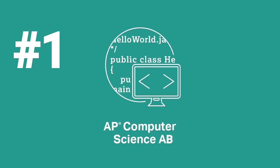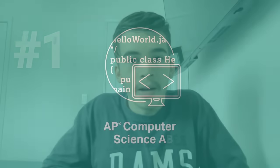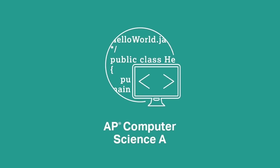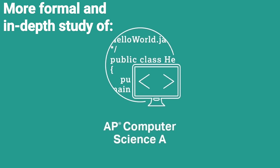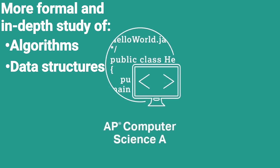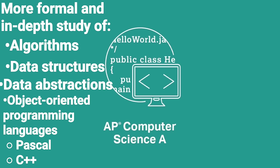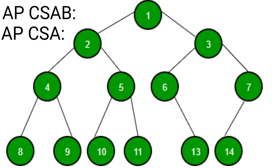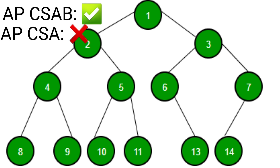Number 1: AP Computer Science AB. The discontinued AP Computer Science AB course included all the topics of AP Computer Science A, as well as more formal and in-depth study of algorithms, data structures, and data abstraction and object-oriented programming in languages like Pascal and C++. For example, binary trees were studied in AP Computer Science AB, but not in AP Computer Science A.